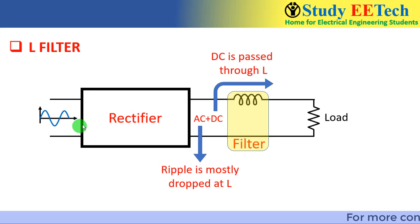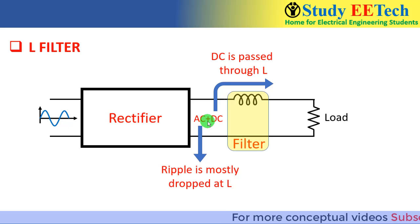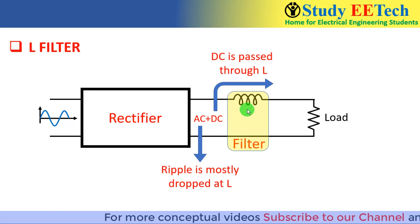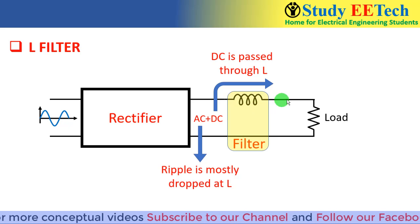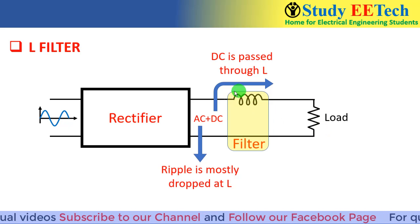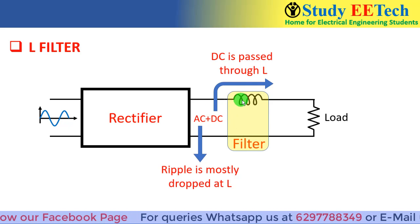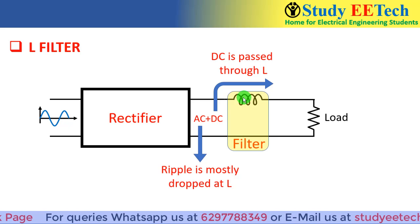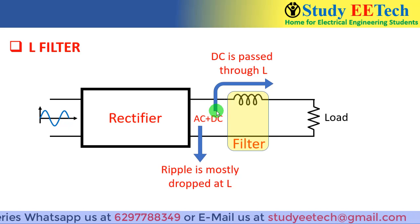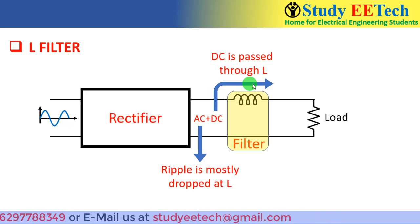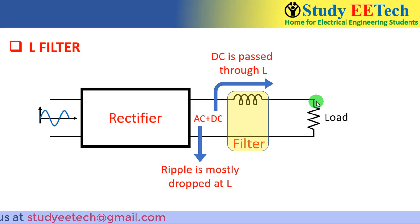First, the L filter. The rectifier output provides pulsating DC, which is AC plus DC. The inductor is placed in the series path, followed by the load. Since the inductor offers zero impedance to DC, the DC signal passes directly through the inductor and appears at the load.